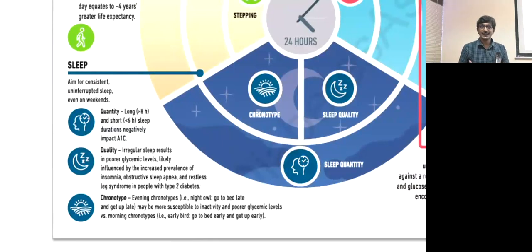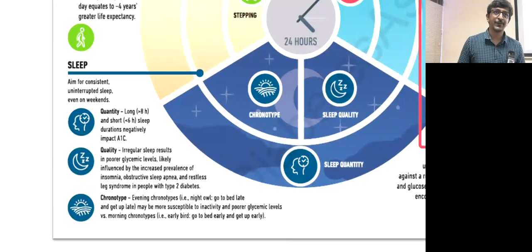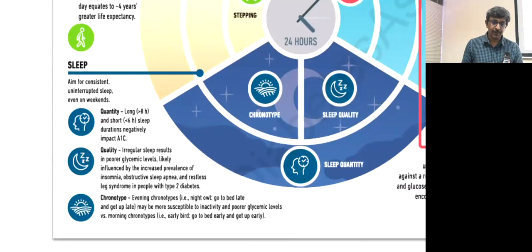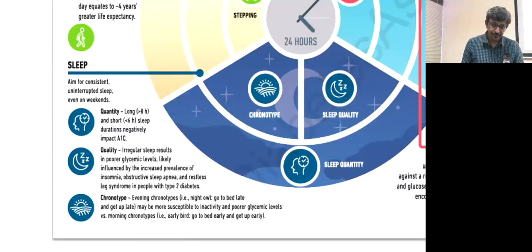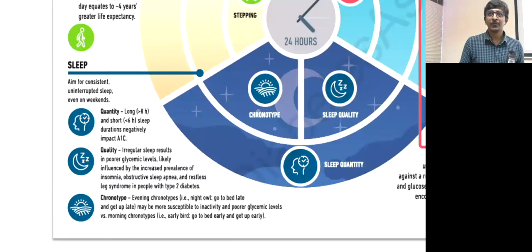Sleep is also important. Sleeping more than eight hours or less than six hours is not ideal in diabetes — six to eight hours is the optimal range. Quality of sleep matters too: OSA, waking up multiple times at night can affect glycemic control. Interestingly, early risers have better glycemic control than night owls — though this chronotype generally cannot be changed.